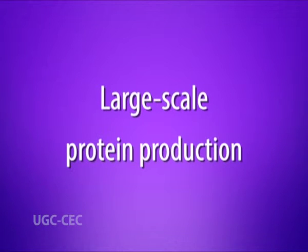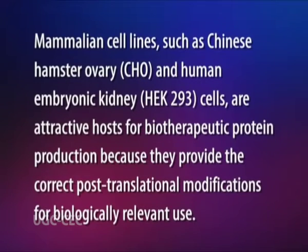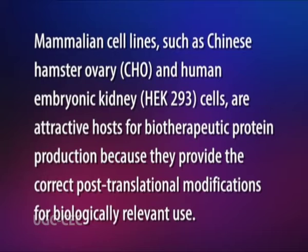Next is large-scale protein production. Transient transfection can be used in mammalian cell culture systems to generate high yields of functional protein for biotherapeutic applications. Mammalian cell lines such as Chinese hamster ovary (CHO) and human embryonic kidney HEK-293 cells are attractive hosts for biotherapeutic protein production because they provide the correct post-translational modifications for biologically relevant use.